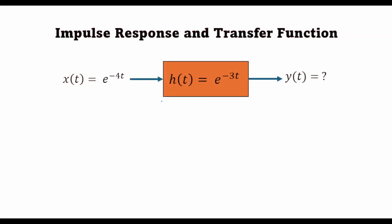Hello and welcome to T Academy. In today's lecture we'll be finding the impulse response of an LTI system which is excited by an input x(t) of the form e^{-4t}, and the LTI system has an impulse response h(t) given by e^{-3t}. We are interested in finding out the time domain response y(t).